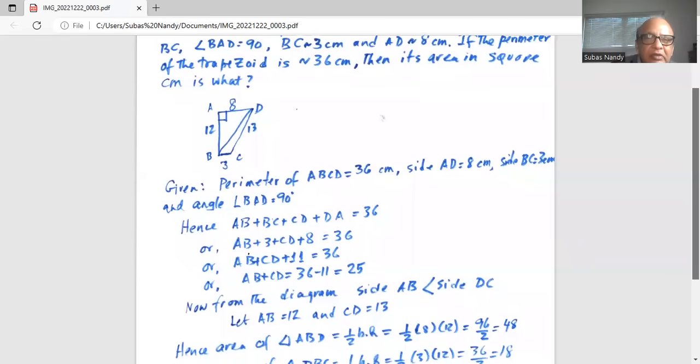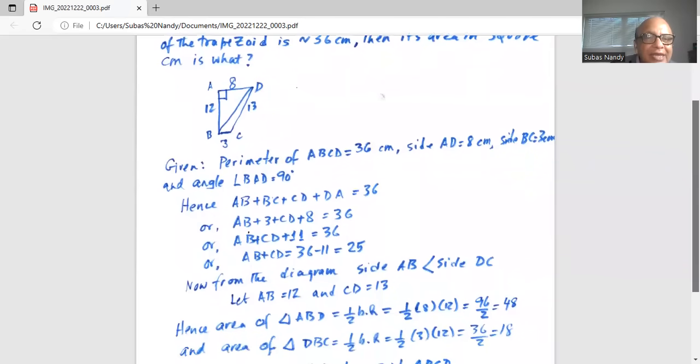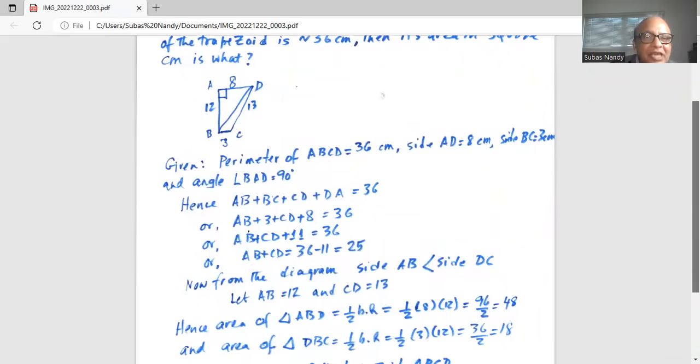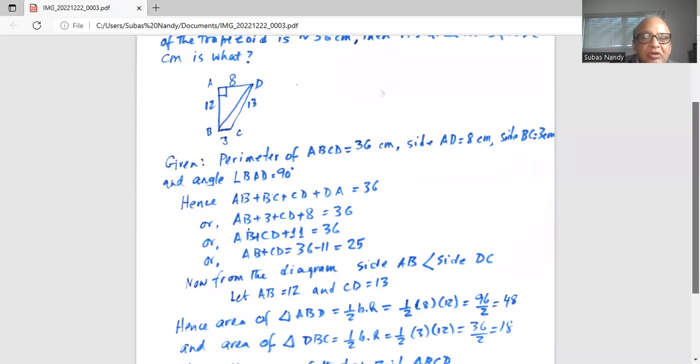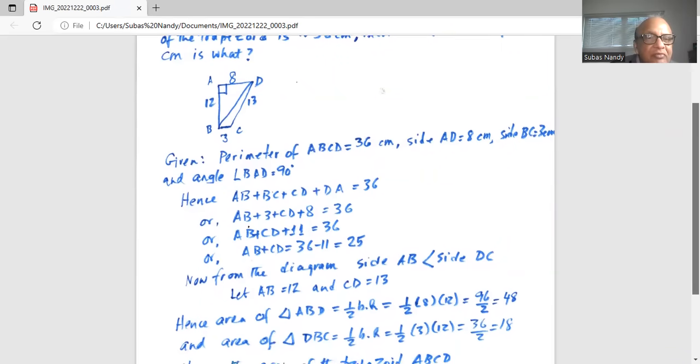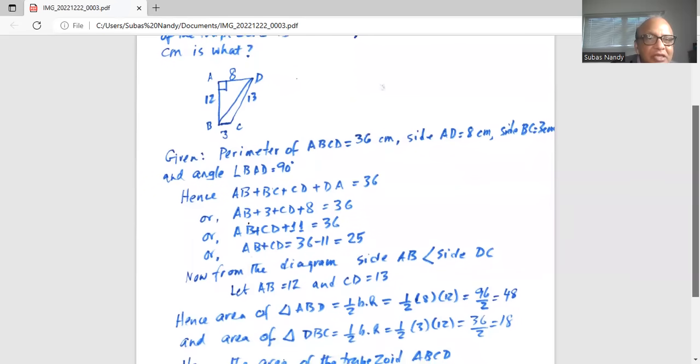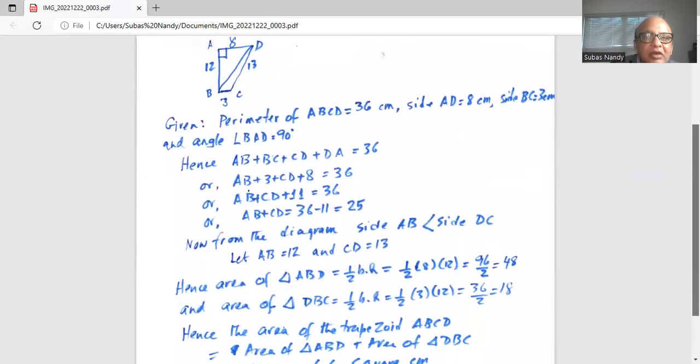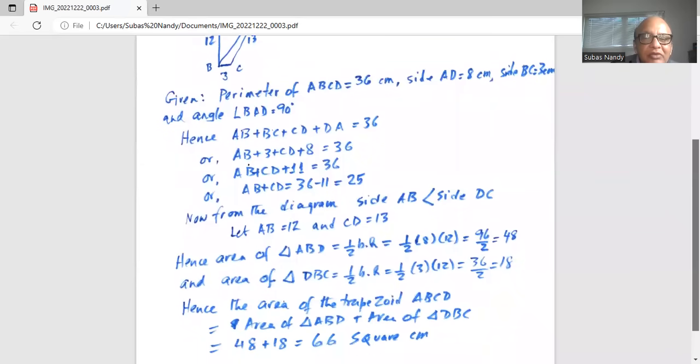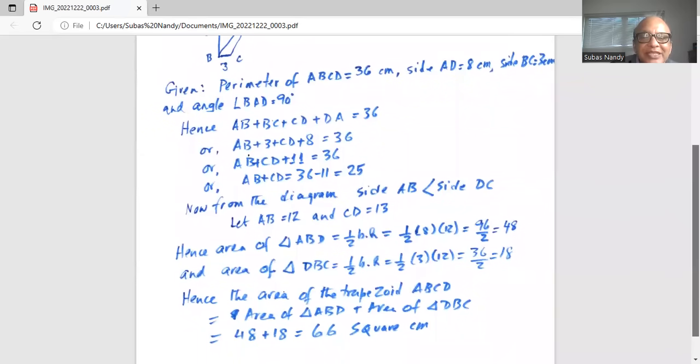So we will find out first the area of triangle ABD is half base times height. Half base is AD is 8 times height is 12, which is 96 by 2 equals 48. And area of triangle DBC is 36 divided by 2 is 18. Hence the total area of the trapezoid is area of triangle ABD plus area of triangle DBC, or 48 plus 18 equals 66 square centimeters. Hence the correct answer is 66 square centimeters.